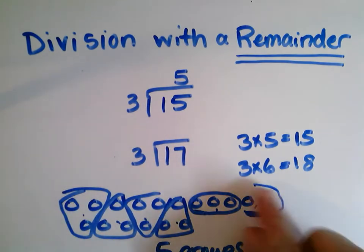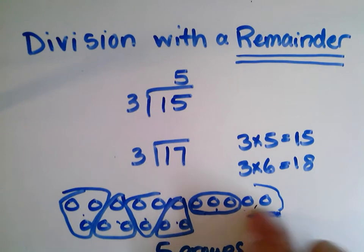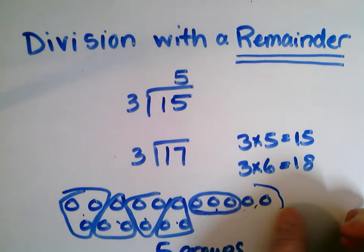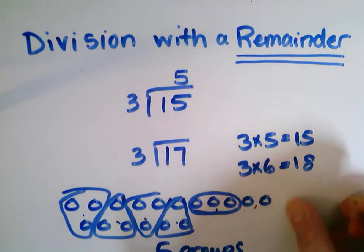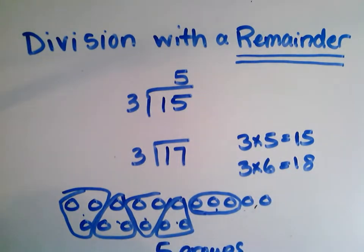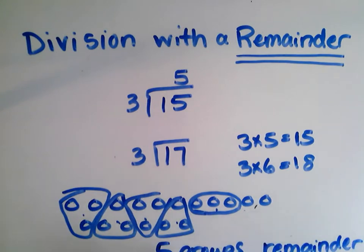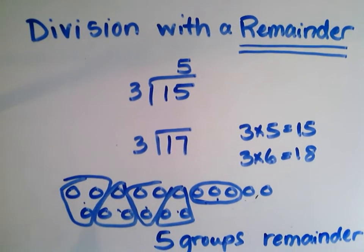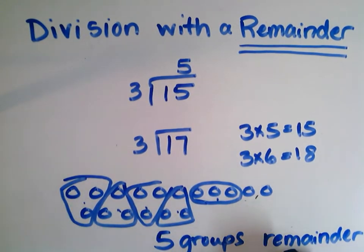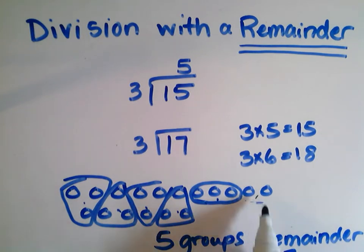But look — I have these 2 left over. I can't make a group of 3 with these, but I still have to figure something out about them. So I can make 5 groups with a remainder — something that is remaining. I have a remainder of 2. I have 2 left over.